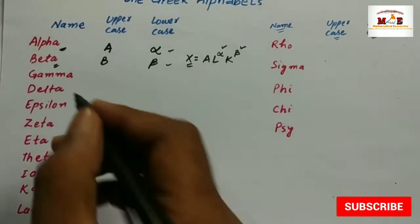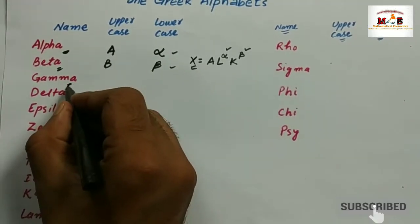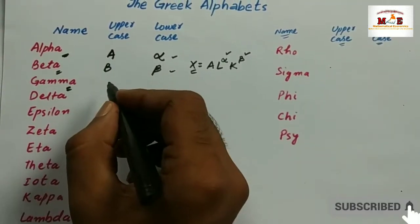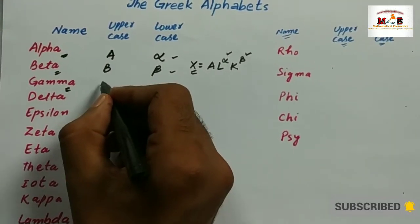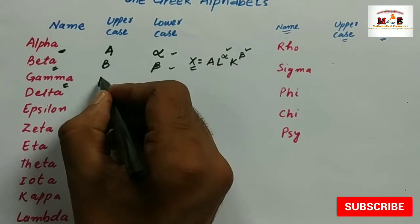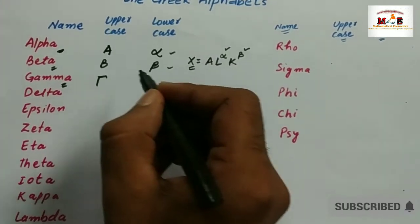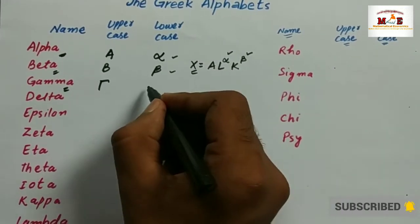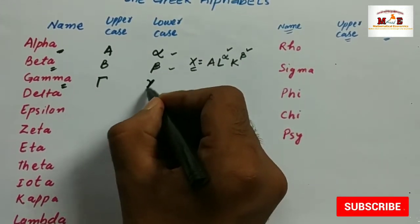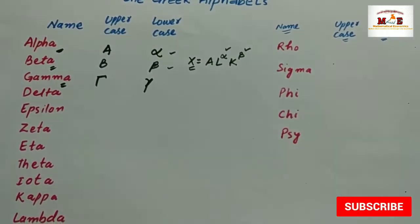The next one is gamma. Its uppercase is like this and its lowercase is like this.